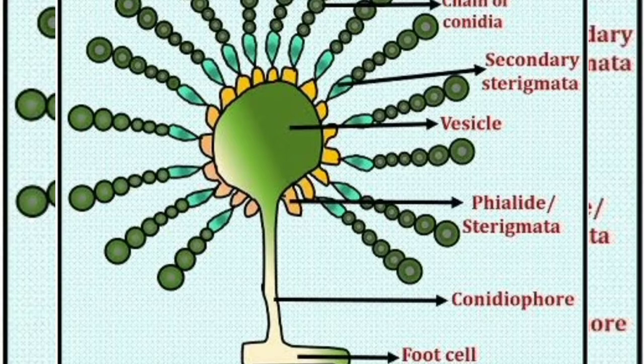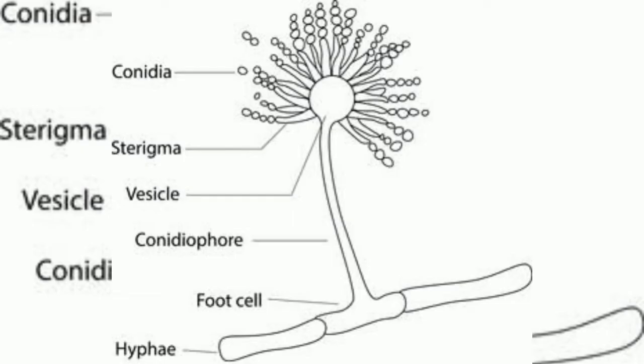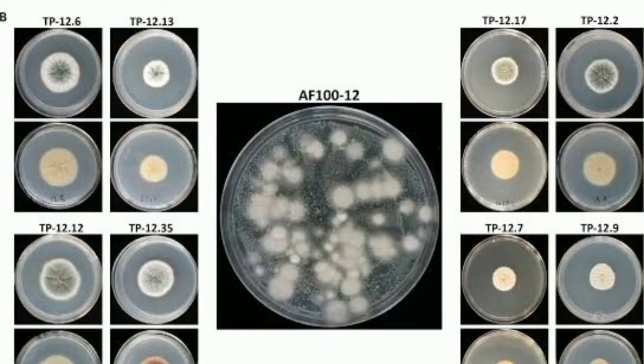Aspergillus has the ability to grow where high osmotic pressures exist, such as high concentrations of sugar. They are highly aerobic and commonly grow as molds on the surface of structures — molds meaning they form spatial formations.